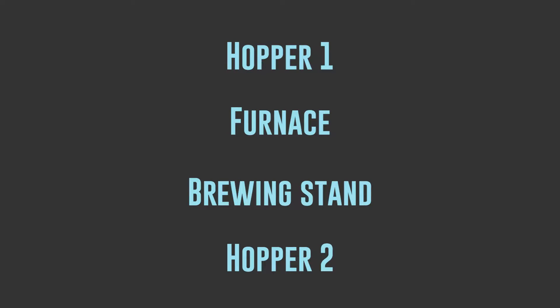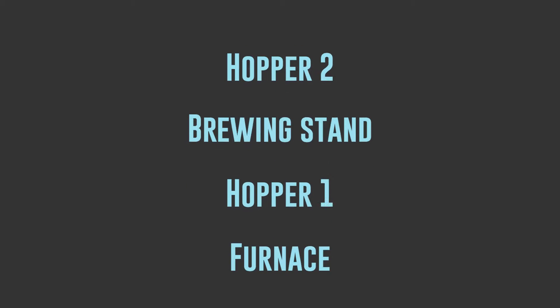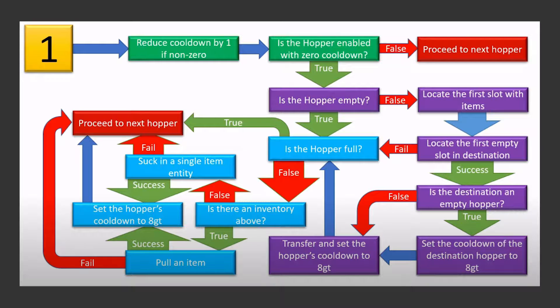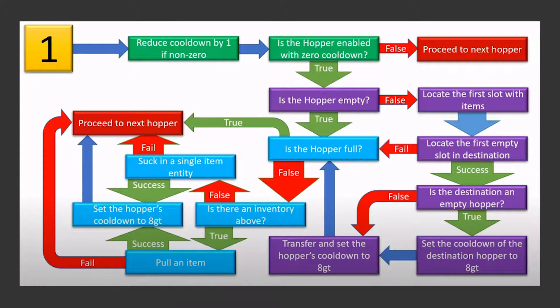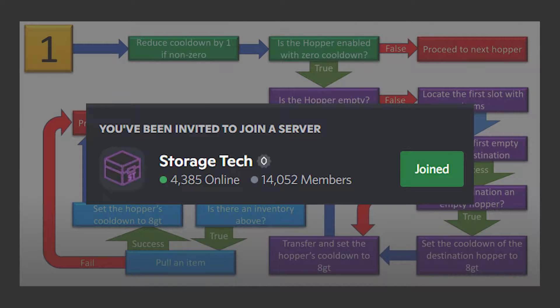The game makes a list of all the loaded ticking block entities and executes them in order. This order is determined by the order they were placed, but changes on reload depending on the location it is saved to your hard drive, but for all practical purposes it can be thought of as randomised. I'll be using this simplified flowchart by Cubic Meter to explain hoppers and item transfer, but there are more in-depth resources over on the storage tech discord if you are interested.